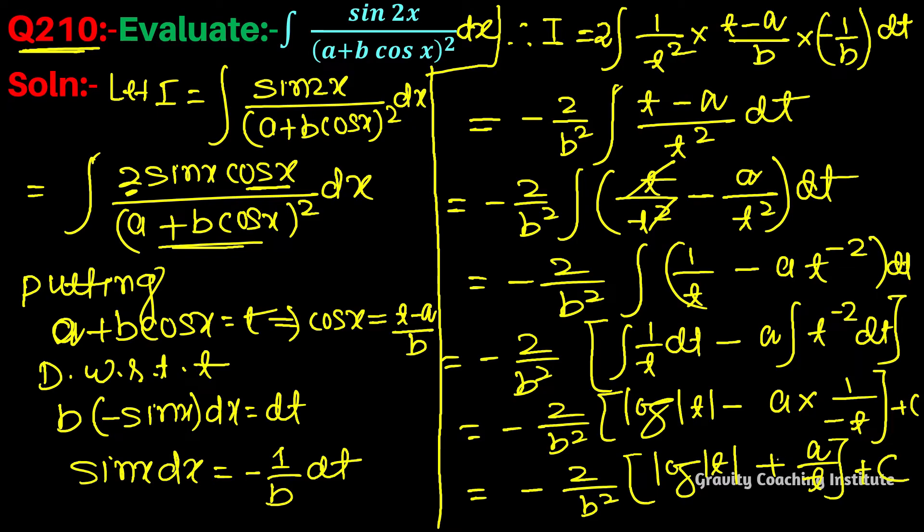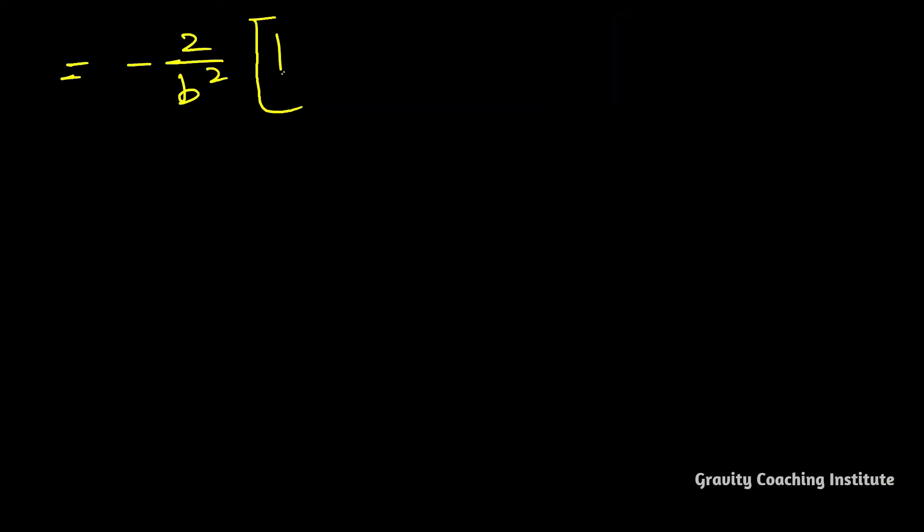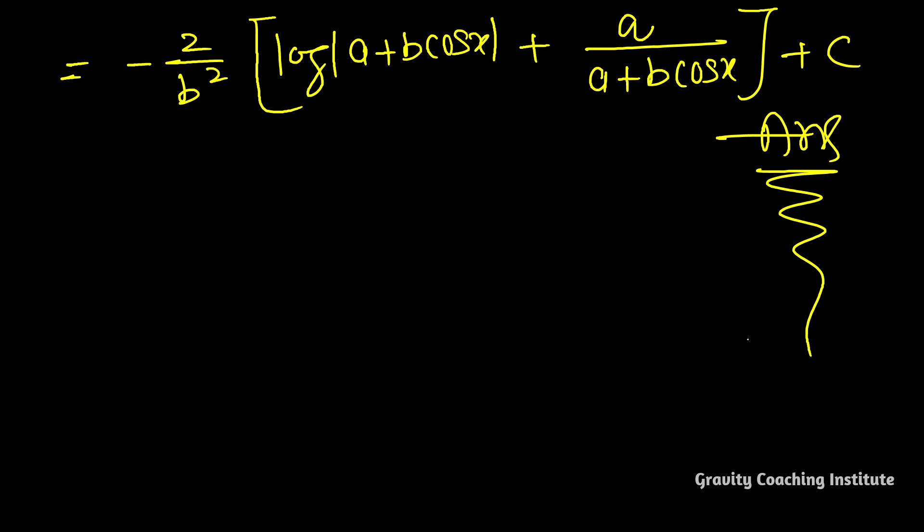Equal to minus 2 by b square log mod a plus b cos x plus a upon a plus b cos x plus c.